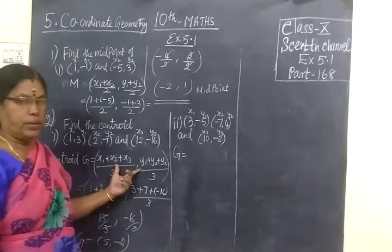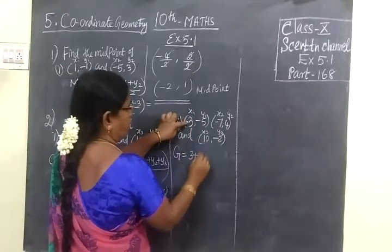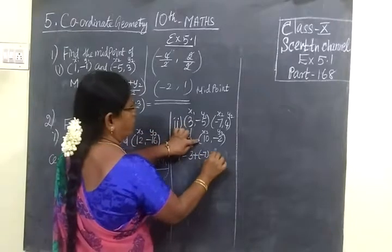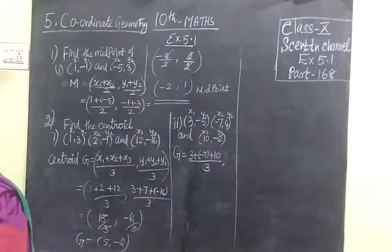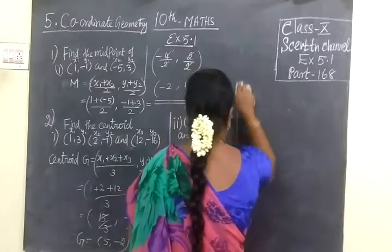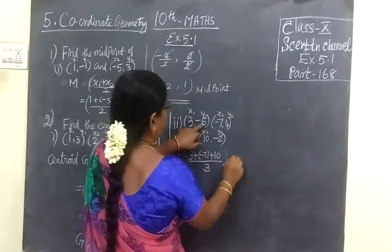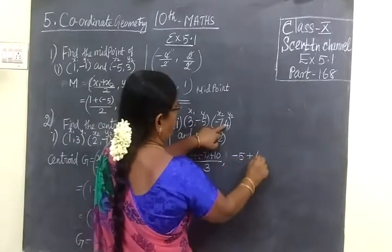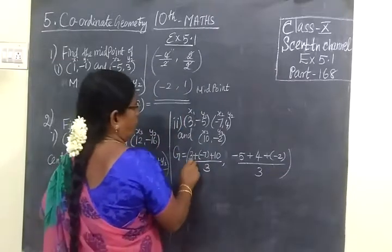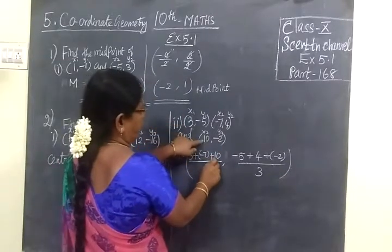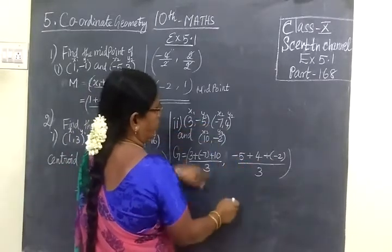Already the formula is written here, so no need to write again. Write x1 plus x2 plus x3 by 3, then comma. Here you are writing y1. What is y1? y1 plus y2 plus y3 by 3. If you want, you can write here also.